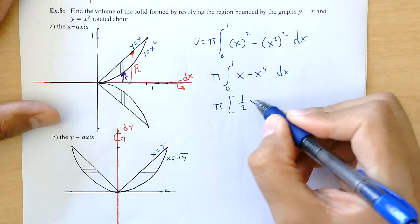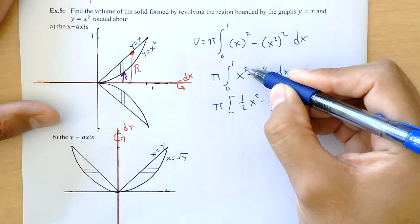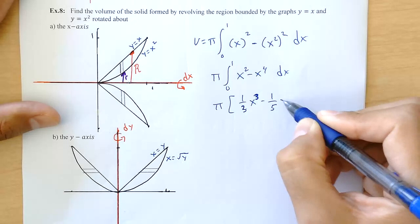Which gives me one half x squared minus... wait, that's an x squared right there. I didn't square the x, that's an x squared, which means that's x cubed right there.